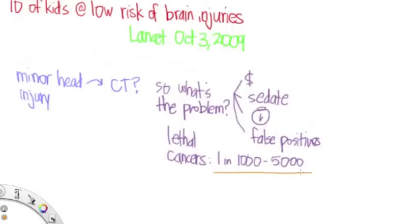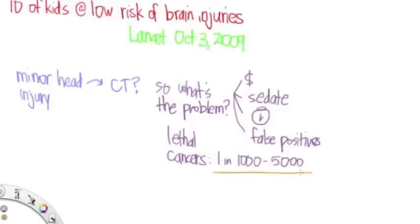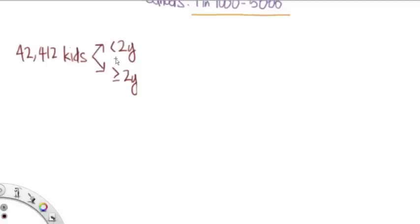Using this and the results of the studies, we're going to be able to create a tool that's going to allow us to have an informed discussion with parents regarding whether a CT is a good idea or not. So this study looked at 42,000 kids. Think about that. 42,000. That's a huge number. And this is broken down into two groups: kids less than 2 and those 2 and older.